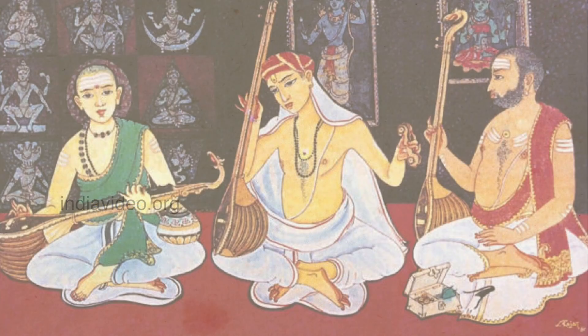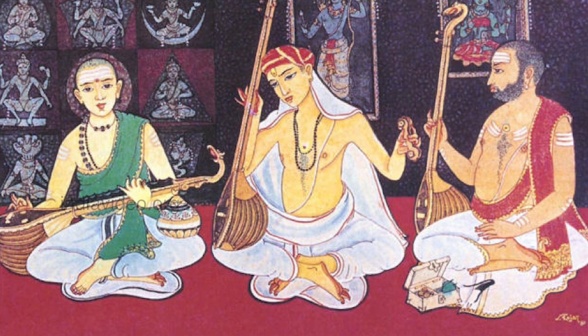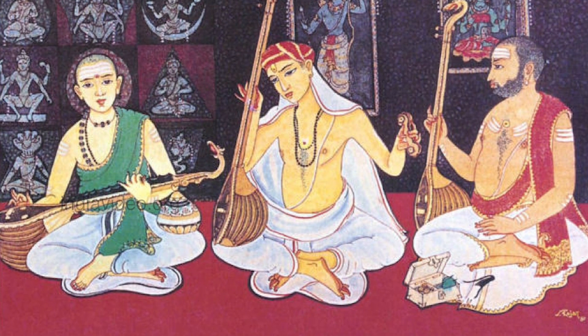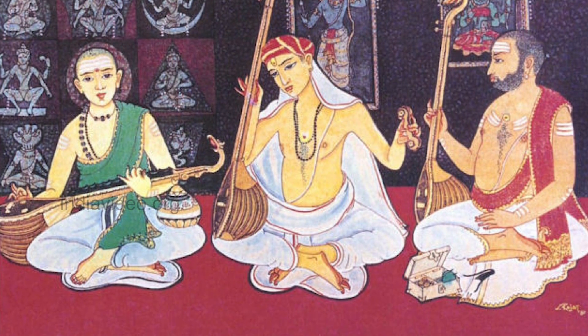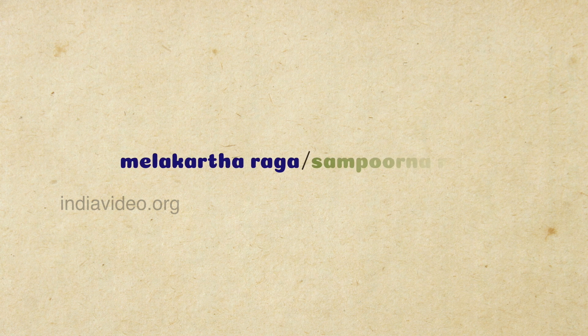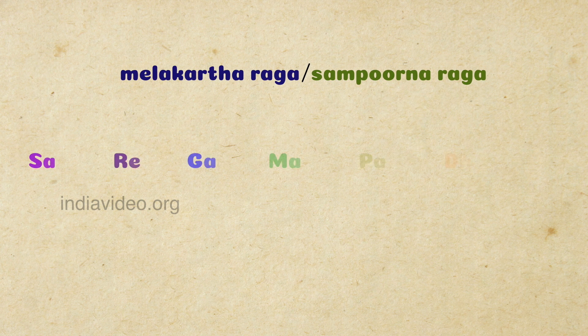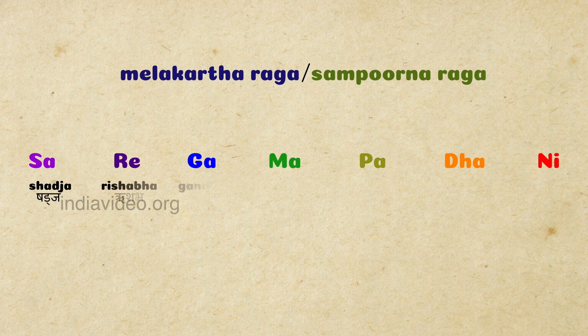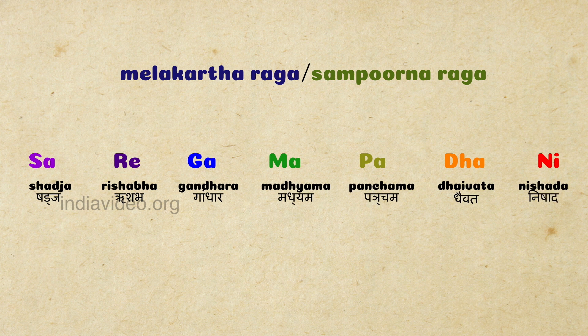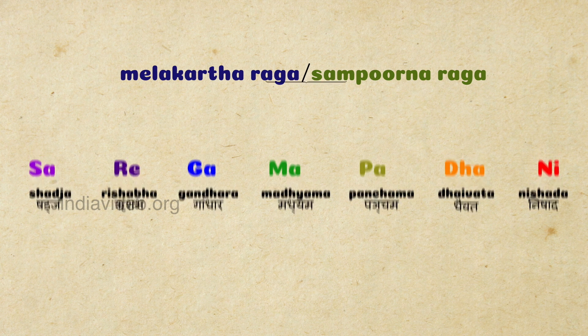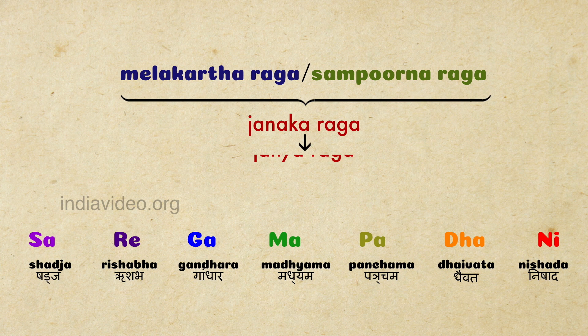One of the most fascinating examples of Kattapayadi is its use in South Indian classical music. The melodic scales in Indian classical music are known as raga. In the South Indian classical music tradition, Melakarta is a collection of 72 ragas. The Melakarta ragas are also called Sampurna ragas or complete ragas, as they have all seven swaras or notes of the octave in both the ascending and the descending scales. The Melakarta are the parent ragas from which many other melodic scales are derived.